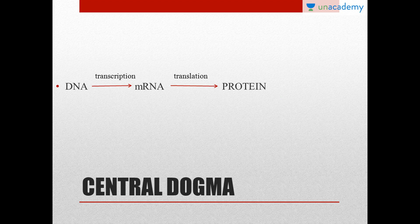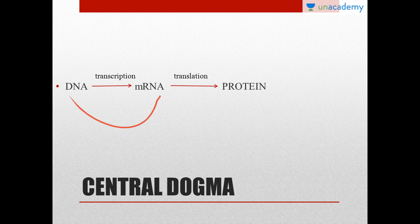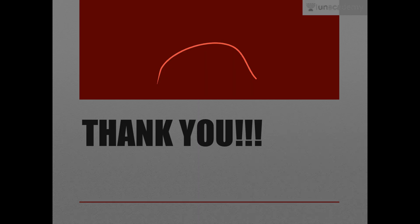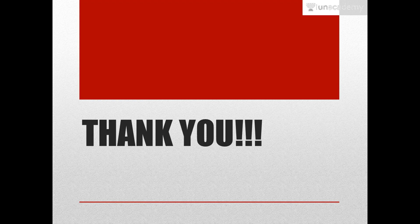Finally, here is the central dogma: in our body, DNA first replicates itself, then forms messenger RNA (mRNA), which then forms protein. The process from DNA to mRNA is known as transcription, and from RNA to protein is known as translation. These are very important steps in gene expression, which we will discuss in the next video. I hope DNA replication is clear — if you have any queries, please comment in the comment section.